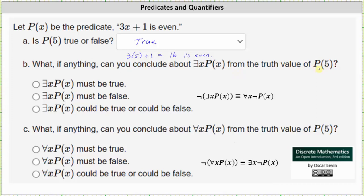Well, since P of 5 is true, we know there exists x such that P of x is true, or such that 3x plus 1 is even, which indicates there exists x such that P of x must be true. We select option 1.